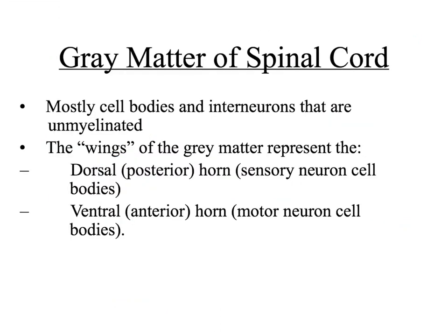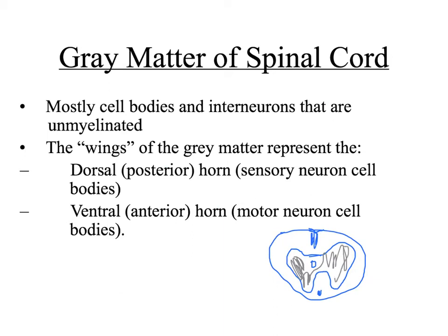Now let's talk about the gray matter of the spinal cord. The gray matter contains mostly cell bodies and interneurons. The projections of gray matter that extend through the white matter to the outer surface of the spinal cord are called horns. On the anterior side there is the anterior horn, and on the posterior end there is the dorsal or posterior horn. On the sides there is the lateral horn.